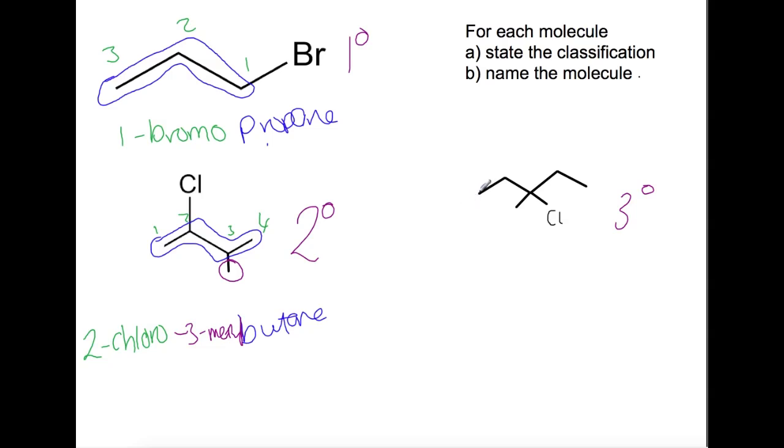And the final example, we've got a chain of one, two, three, four, five. So the name will be based on pentane. We're then going to number from the end closest to the chlorine and that is either side on this one. So one, two, three, four, five. So we have 3-chloro and the branch is a methyl and it's also on number three. So we have 3-chloro-3-methylpentane.